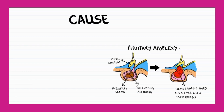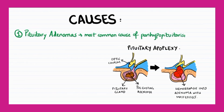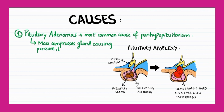Hypopituitarism can occur due to multiple reasons such as trauma, radiation, surgery, infections, or hypoxia, but pituitary adenomas are the most common cause of panhypopituitarism. The mass compresses the gland causing pressure, trauma, and necrosis.